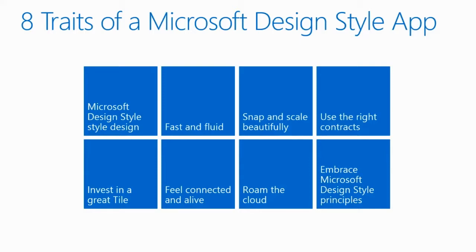There's also snapping and scaling — you must handle those correctly to pass certification for Windows Store apps. You also want to use the right contracts: share, settings, and search contracts. You have to at least support the settings contract to pass store certification. You want to think about tiling — live tiles, updating live tiles, or push notifications to give the user the impression your app is information-rich and constantly providing value.